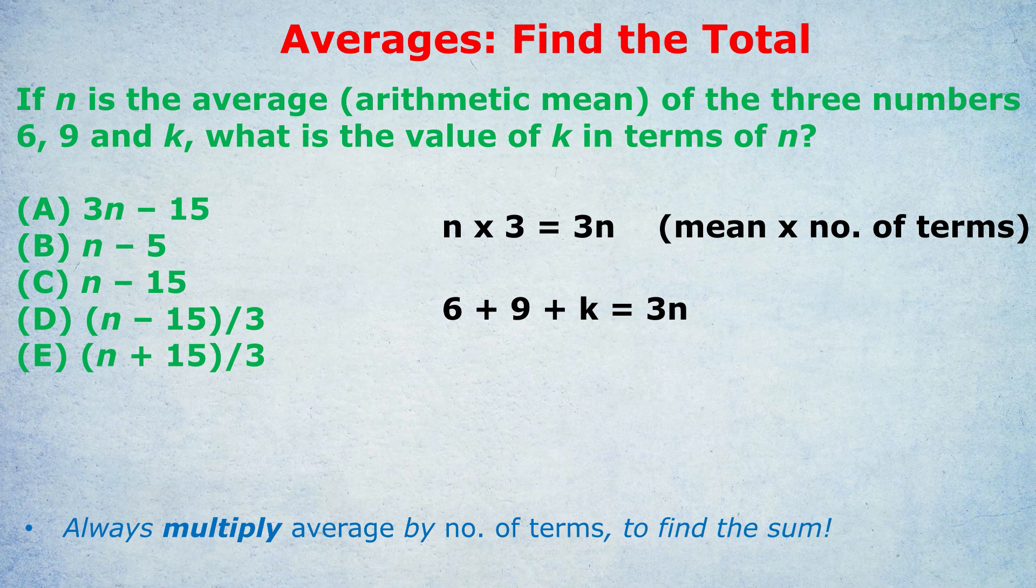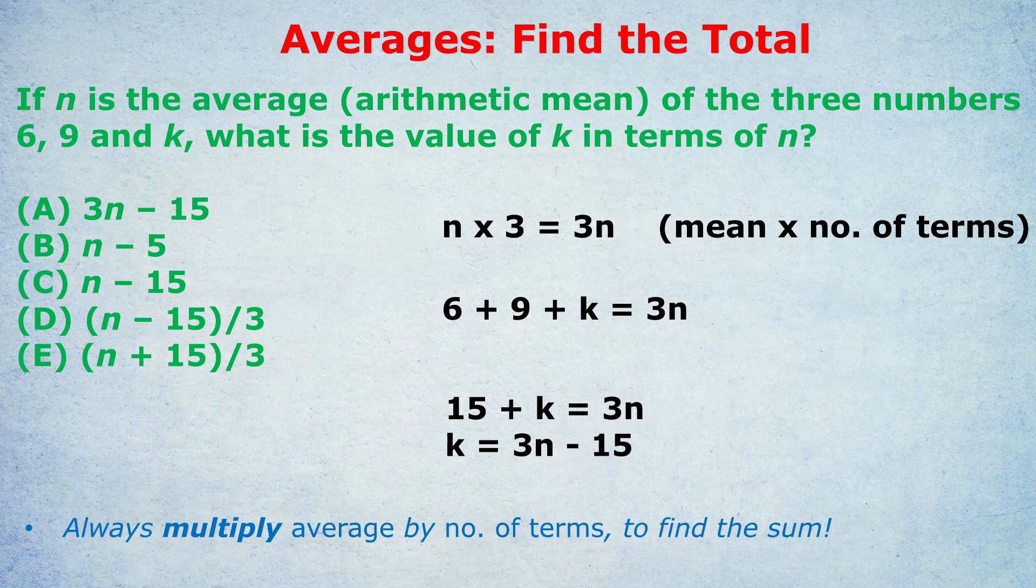When they ask that, they mean that they want the k on its own with all the other stuff on the other side. So 6 plus 9 is 15, and then bring that 15 across by subtracting it from both sides, and we get k equals 3n minus 15, which is A. Now that question sounded quite complicated when I first read it. And I was like, what are they asking? How would I start with that? And many students would get confused, or they might pick numbers. But if we focus exclusively on this method of multiplying the average by the number of terms, even if we don't quite understand how that's going to help us, then we'll get there quickly and easily. I can barely think of a question having done hundreds of average questions where the sum or the total isn't useful.